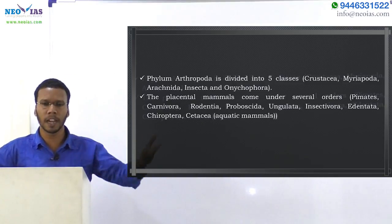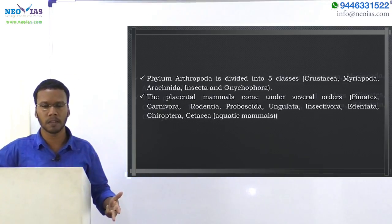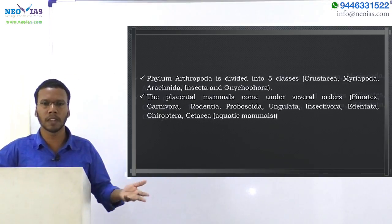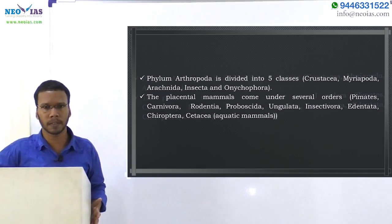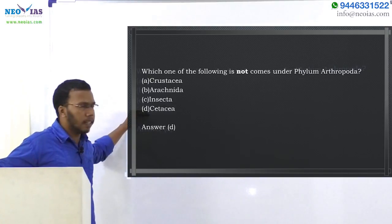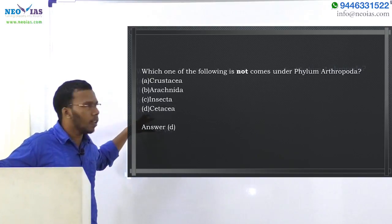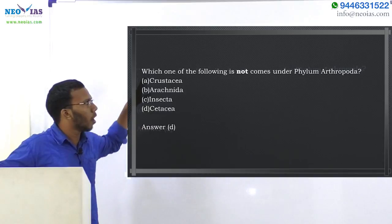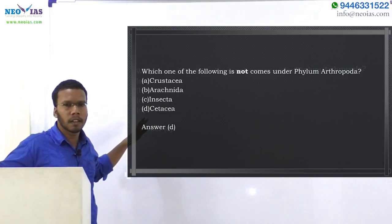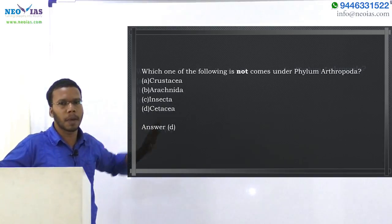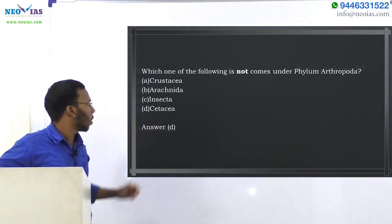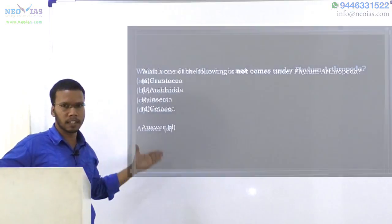So the answer is D — Cetacea — because Cetacea does not come under phylum Arthropoda. It comes under placental mammals. Therefore, our answer is Cetacea.